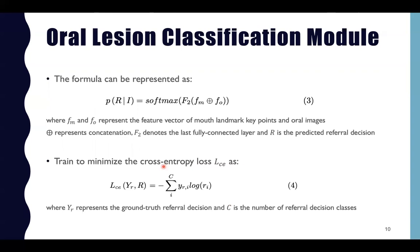The formula can be represented as Equation 3, where fm is the mouth landmark feature and fo is the oral image feature. The two features are fused together through concatenation as guidance to the classification model. Both feature vectors are processed through a final fully connected layer, followed by a softmax layer to output the predicted referral decision r. The model is trained to minimize the cross-entropy loss as in Equation 4, where yr represents the ground truth referral decision and c is the number of referral decision classes.